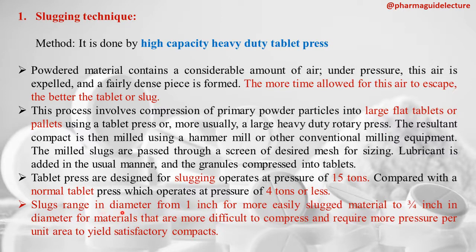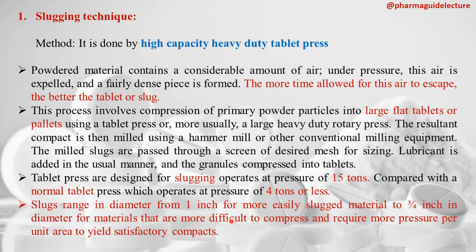Slugs range in diameter from 1 inch for easily slugged materials to 3/4 inch for materials that are more difficult to compress and require more pressure per unit area to yield a satisfactory compact.